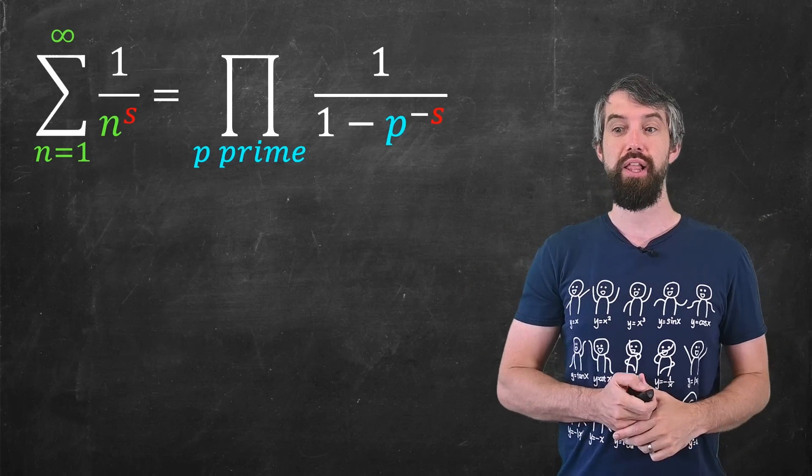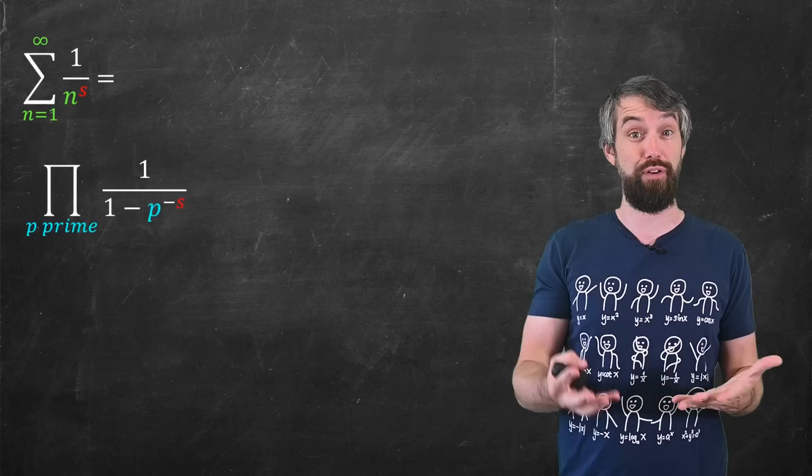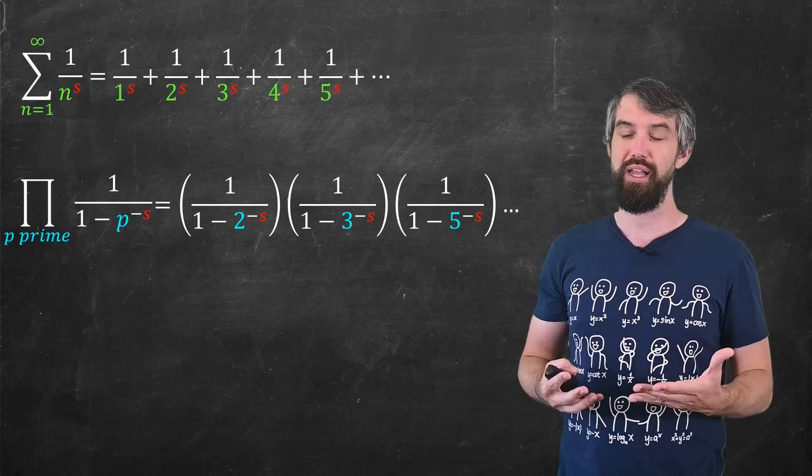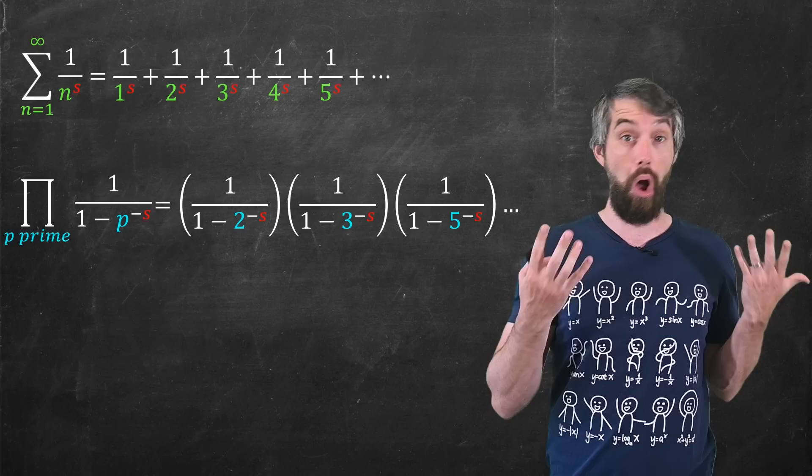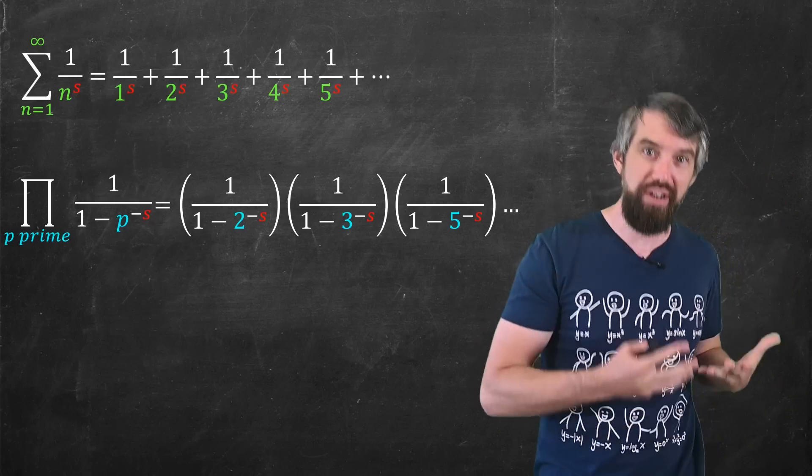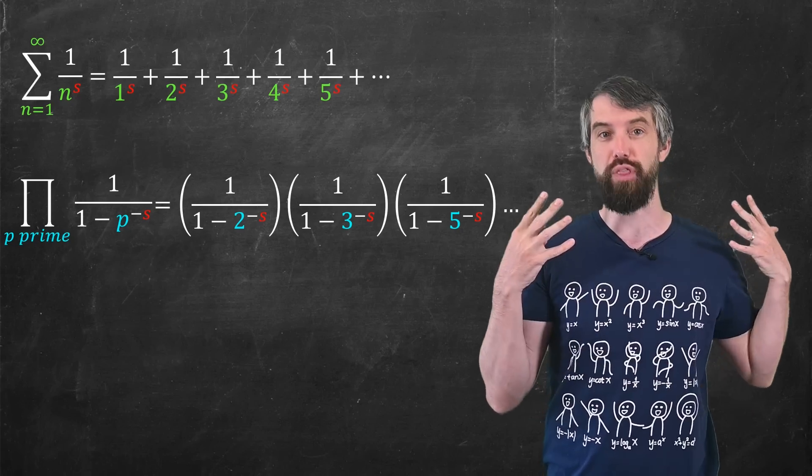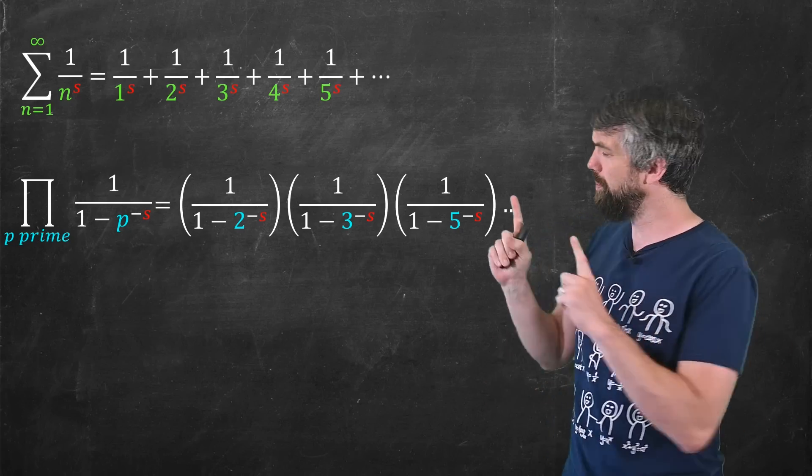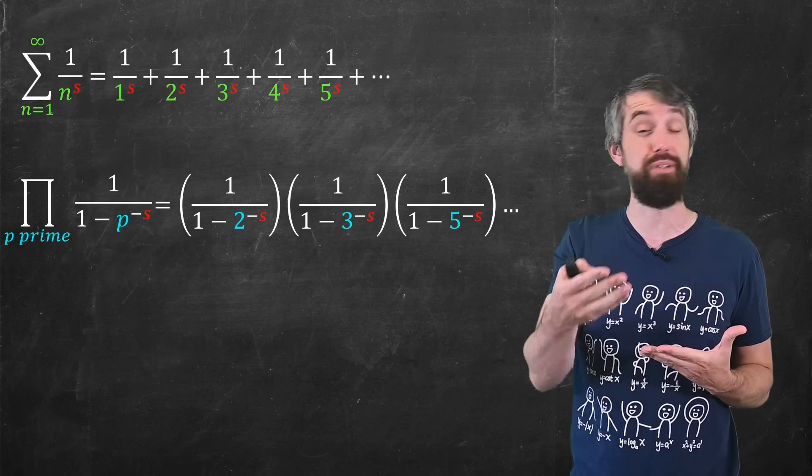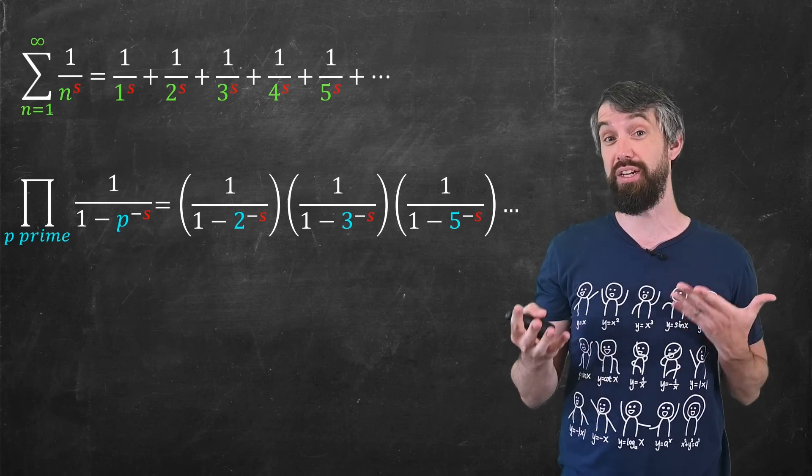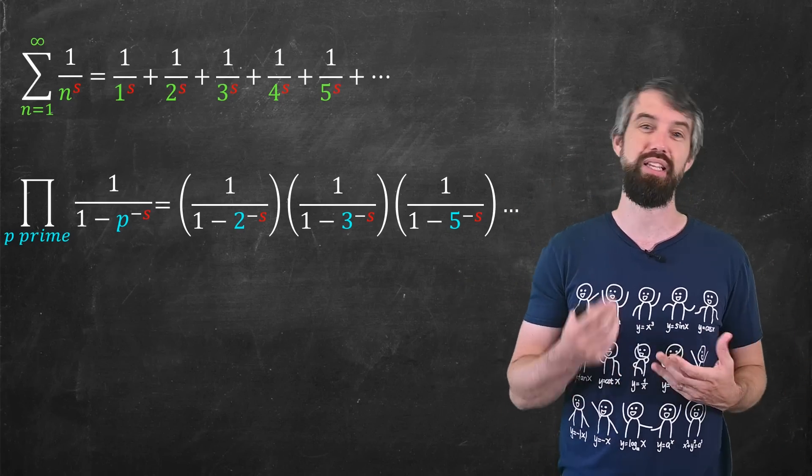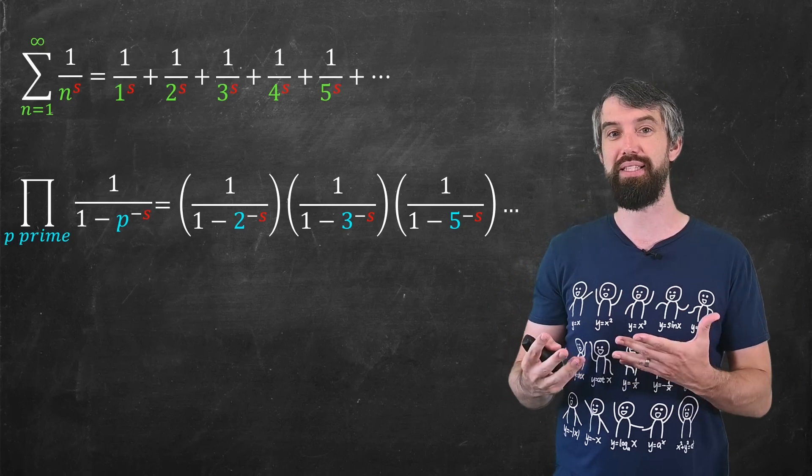Don't let the notation scare you. The big sigma just refers to the sum of a bunch of terms. The big pi refers to the product of a bunch of terms. The sum here is taken over all natural numbers: 1, 2, 3, 4, and so forth. So you get terms like 1 over 1 to the s, 1 over 2 to the s, 1 over 3 to the s, all added together. However, the product is multiplying for all p's that are primes: 2, 3, 5, 7, 11, and so forth.